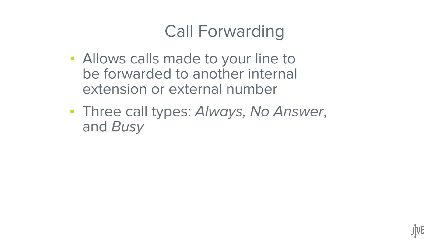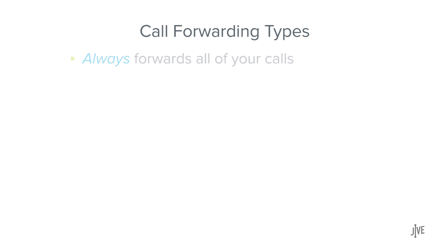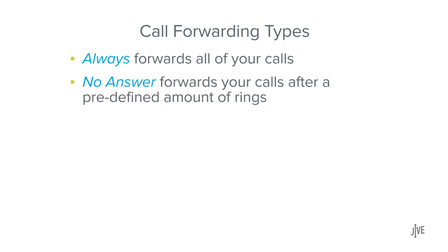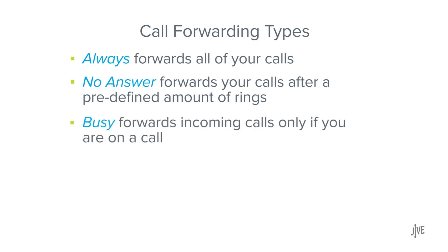There are three different types of call forwarding: Always, No Answer, and Busy. Always forwards all of your calls. No Answer forwards your calls after a predefined amount of rings. And Busy forwards incoming calls only if you are already on a call.